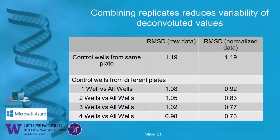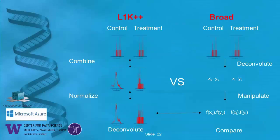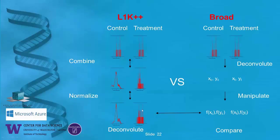This is basically a summary of the pipeline and its differences. With Broad, the idea is to take individual wells, deconvolute them to get gene expression values, do a set of manipulations, and then do your comparison. The L1K++ pipeline takes the different wells, combines them, normalizes to ensure the combination is done in a robust manner, then does the deconvolution, and can then join up with the existing Broad pipeline. I've put double arrows here because this is a very fast pipeline — we can regenerate this, tweak it, look at the data, go back and look at intermediate data very easily.